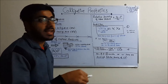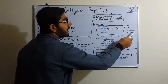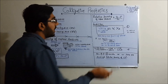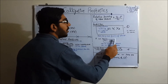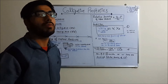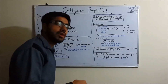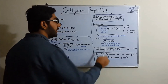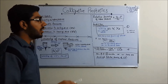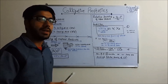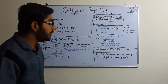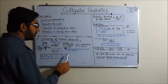The mole fraction is denoted by χ (chi), where A is the solvent and B is the solute. χ_A is the mole fraction of the solvent, equal to the number of moles of solvent divided by the total number of moles of components in the solution — that means moles of solute plus moles of solvent. We also know vapor pressure of solution equals vapor pressure of solvent plus vapor pressure of solute. From these two equations we can derive the lowering and relative lowering of vapor pressure.